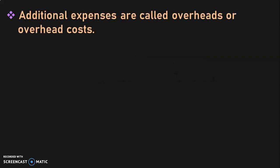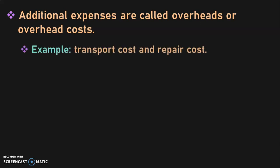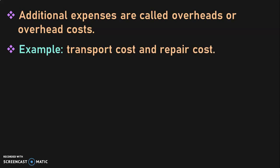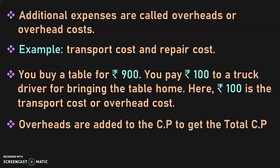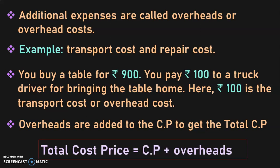Next, let us learn what we mean by overheads. Additional expenses are called overheads or overhead costs. For example, transport costs and repair costs are considered overheads. Suppose you buy a table for rupees 900 and pay rupees 100 to a truck driver for bringing the table home — rupees 100 is the transport cost or overhead cost. Overheads are added to the cost price to get the total cost price. The formula is: total cost price equals cost price plus overheads.